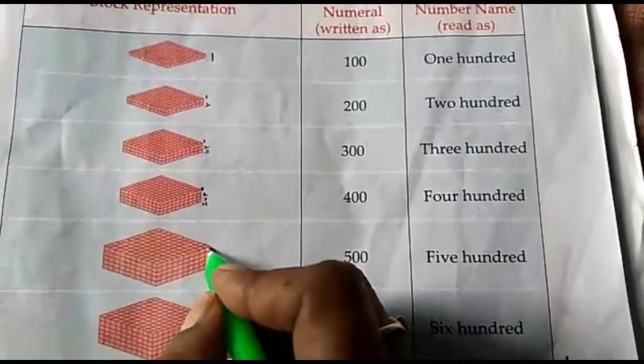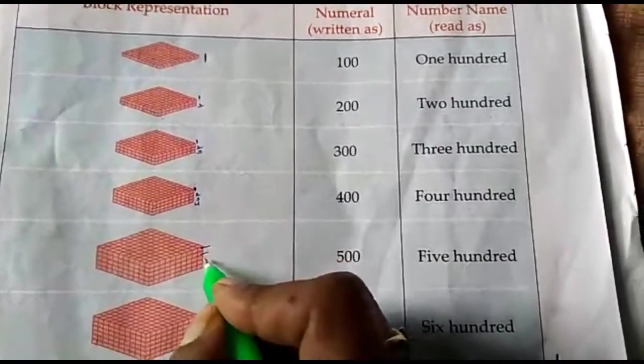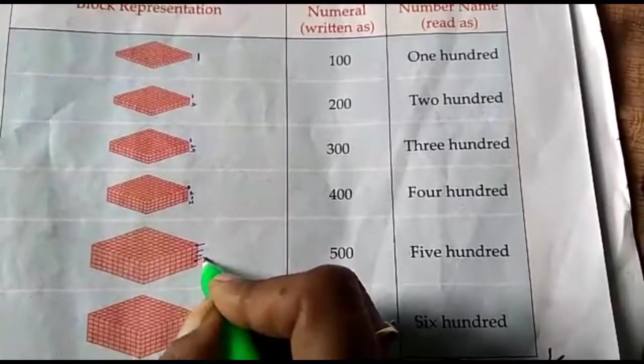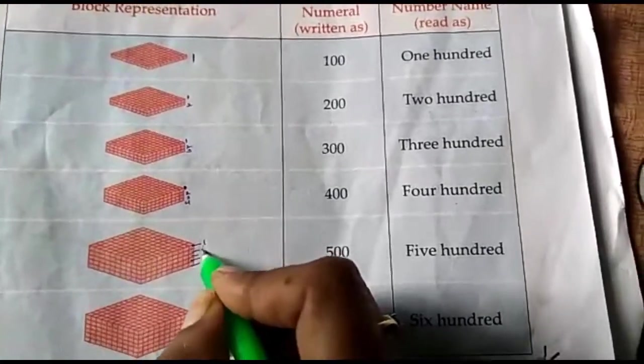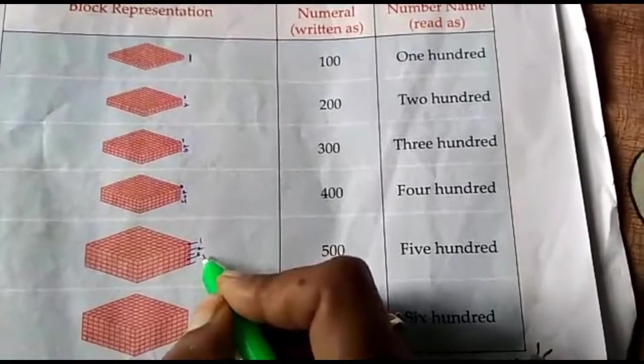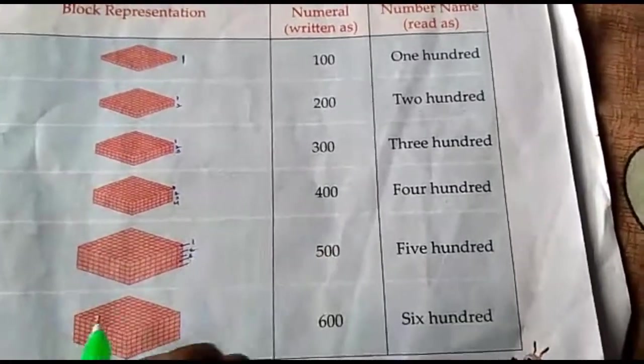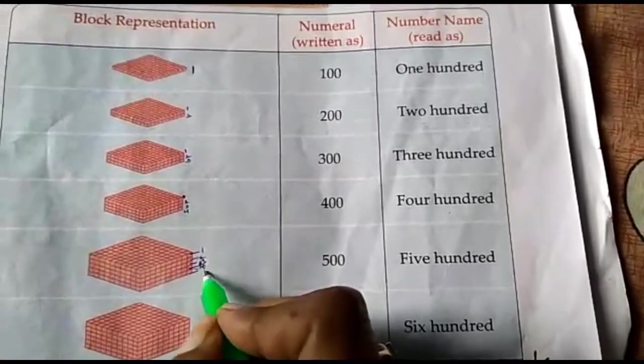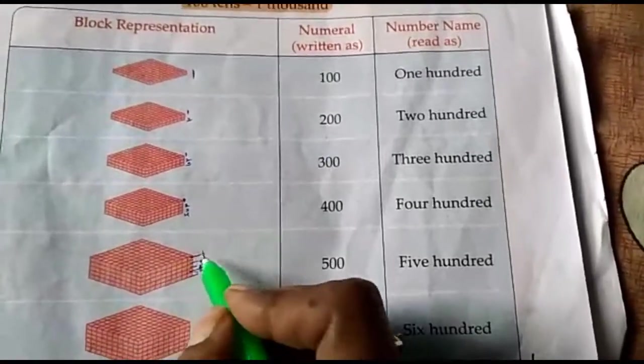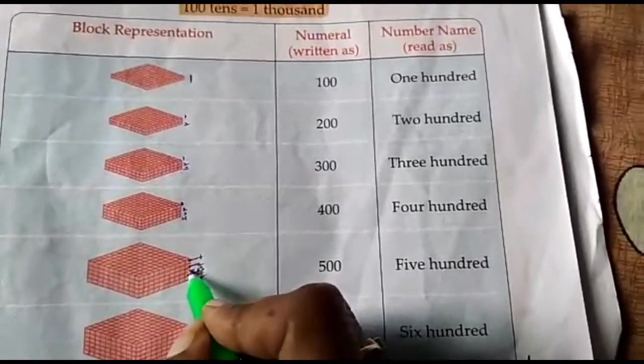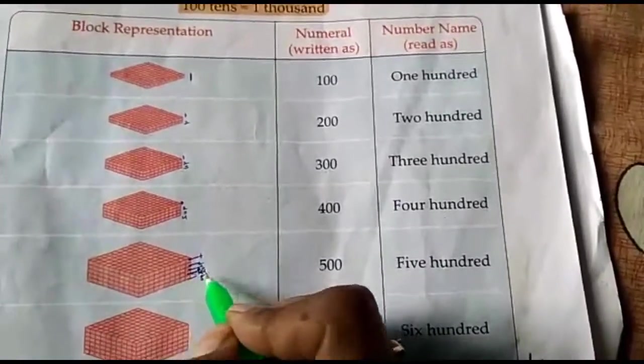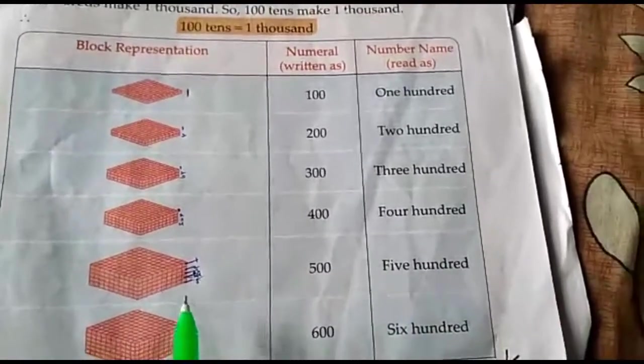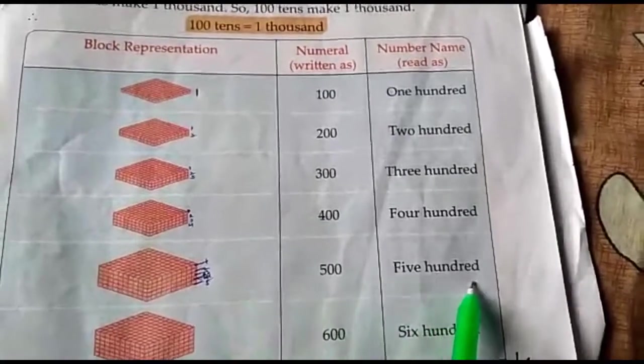Five. One, two, three, four, five. So, five hundred spelling.